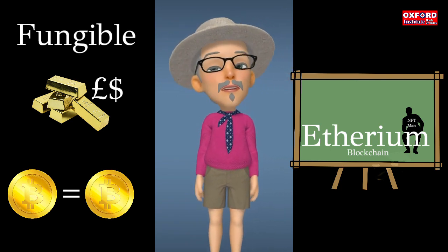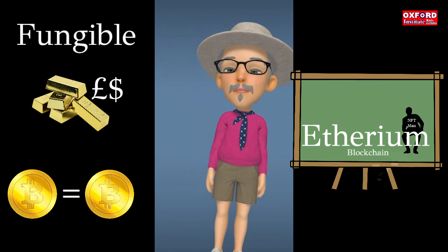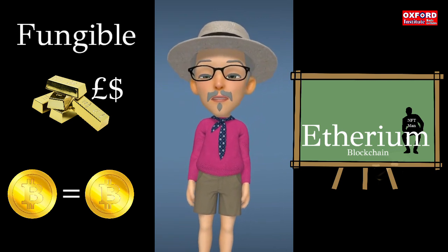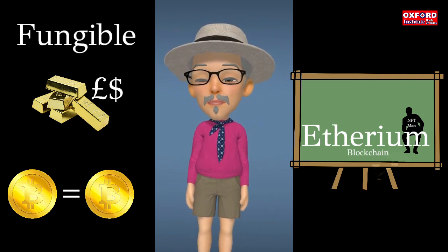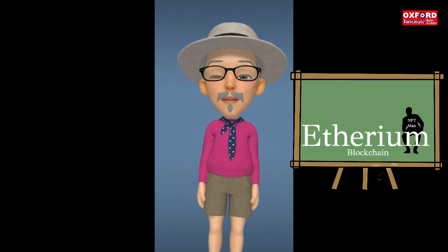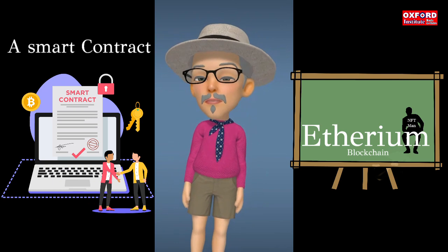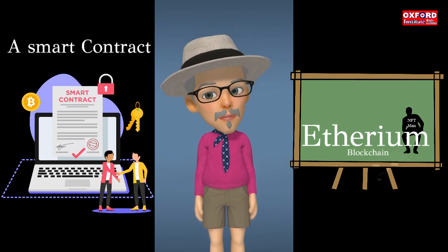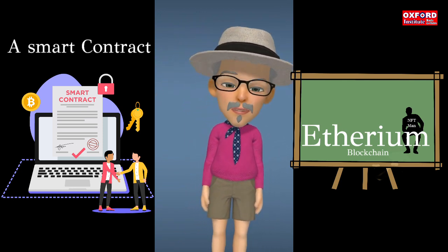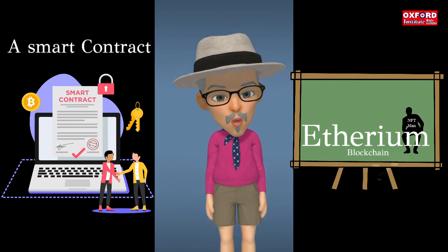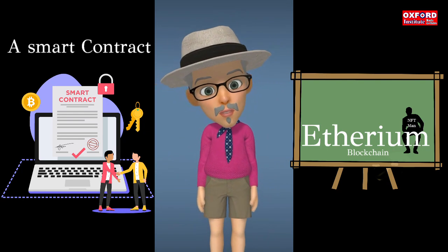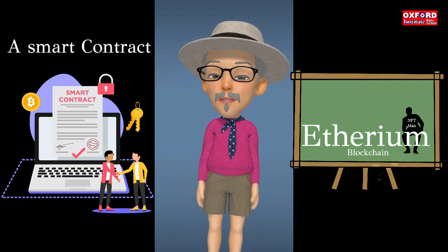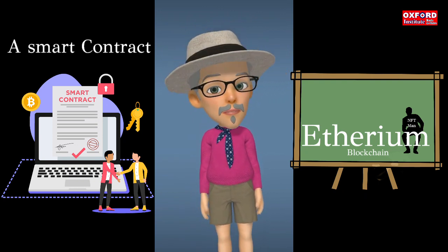Smart contracts — what is a smart contract? A smart contract is any program that runs on a blockchain and uses the blockchain's ability to track its state, process transactions, and interact with addresses. In the case of Ethereum, smart contracts can be written in Solidity or Vyper.